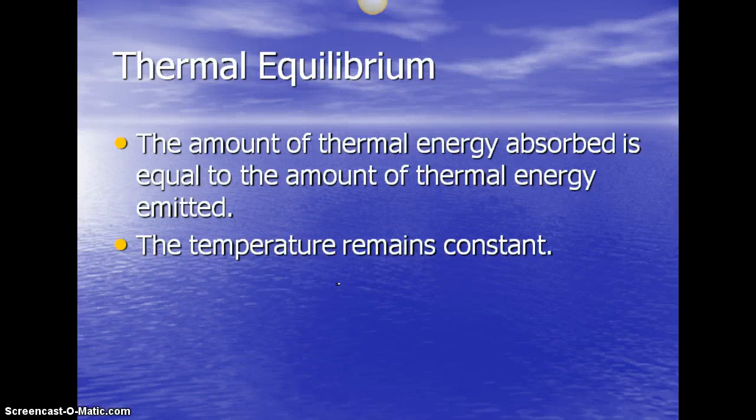And then thermal equilibrium is the amount of thermal energy absorbed is equal to the amount of thermal energy that's emitted. So your temperature remains constant if it's at thermal equilibrium. So we're saying that it's a base, let's say the temperature remains 90 degrees of a surface, then that means it's absorbing and emitting the same amount of energy. It's not changing temperature. If it is changing temperature, it's getting colder, then it's releasing more heat. If it's getting warmer, it's absorbing more heat.